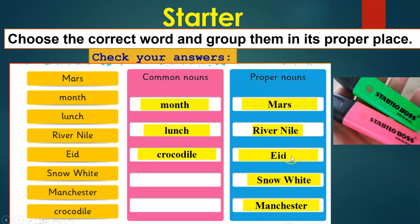What have you observed about the names in the proper nouns? Great observation — they are all written in capital letters. Remember, all proper nouns are the exact name of a person, place, object, or animal, so they are written in capital letters. Common nouns are written in small letters because they are general terms for people, places, things, objects, and animals.